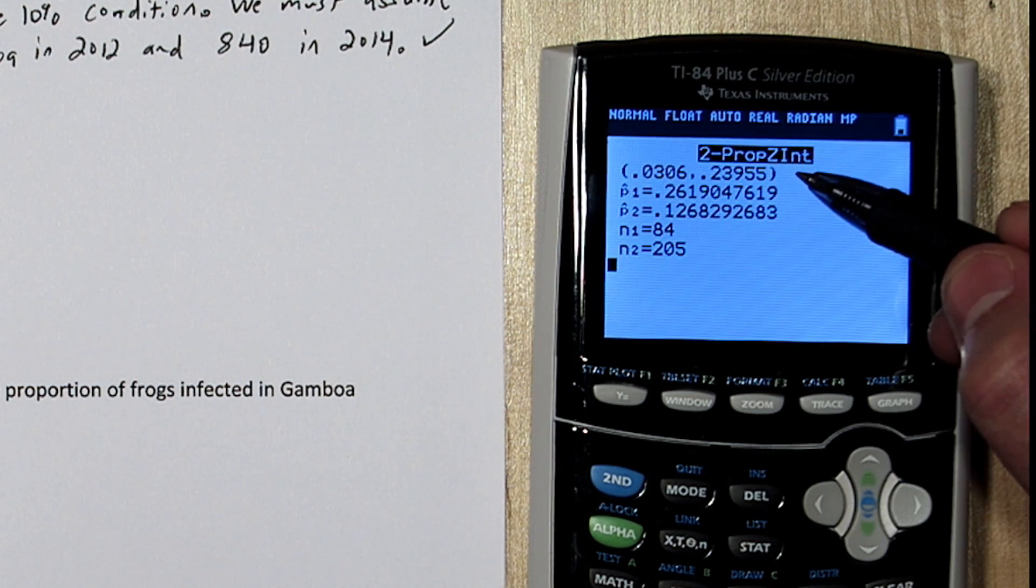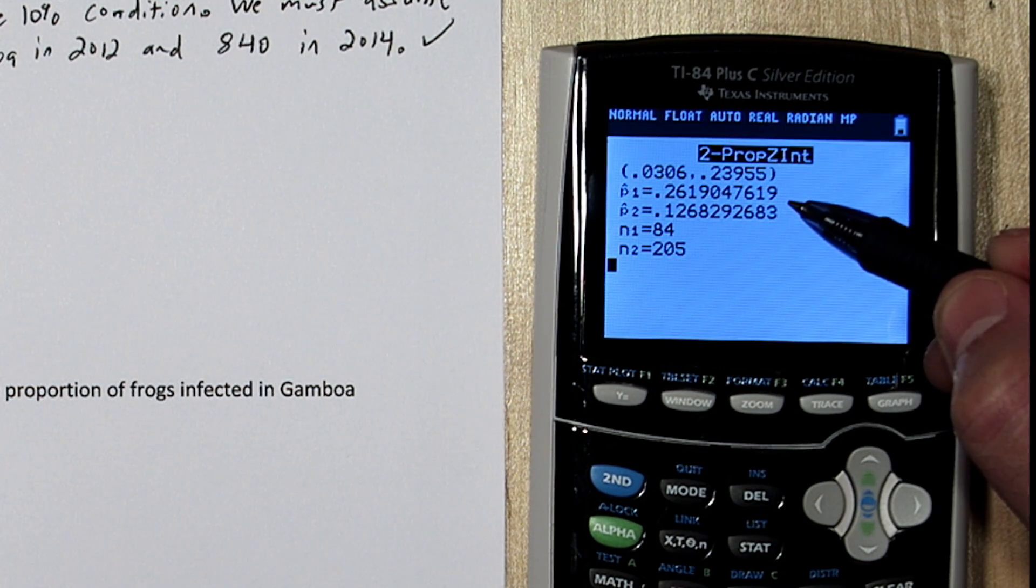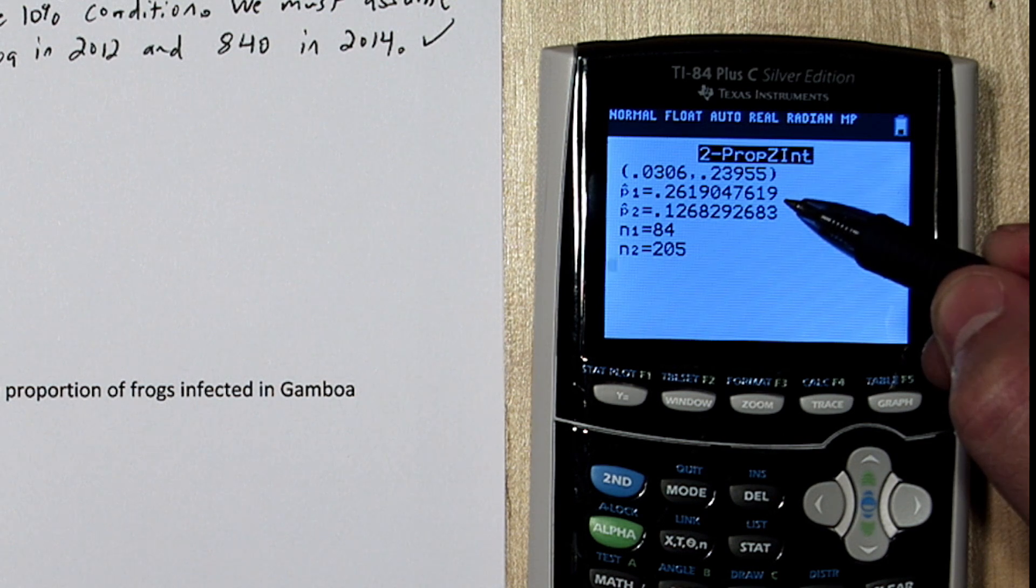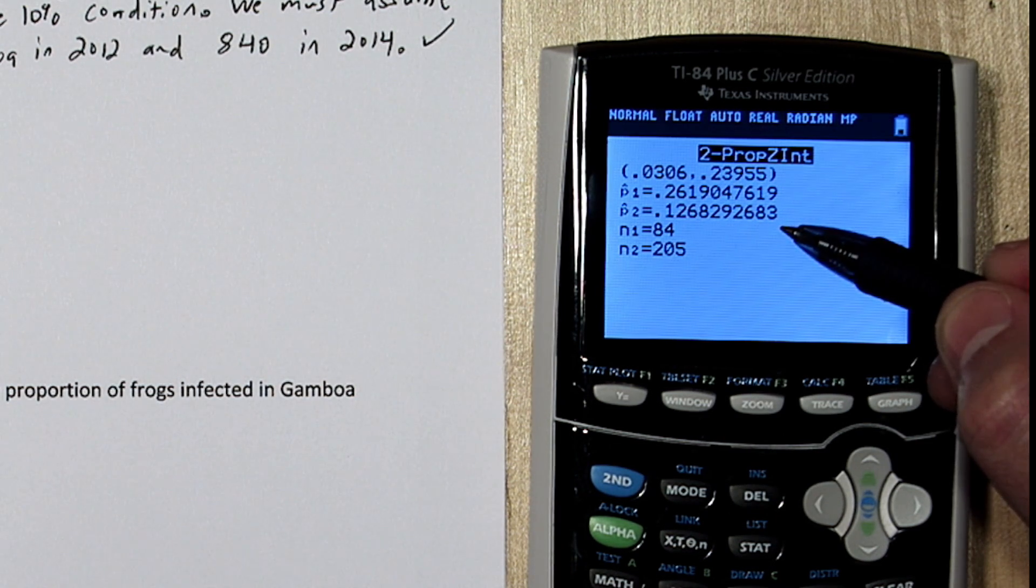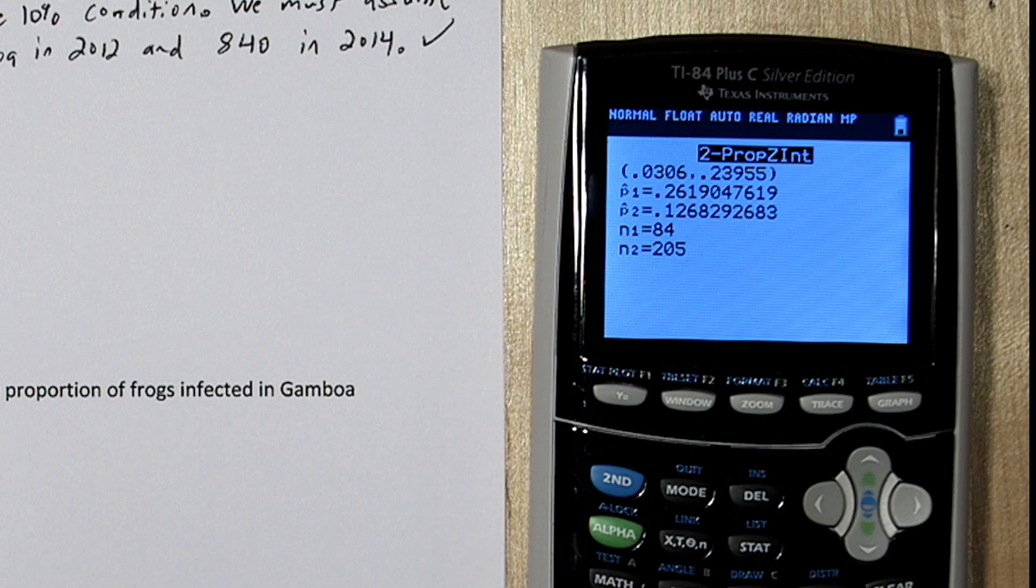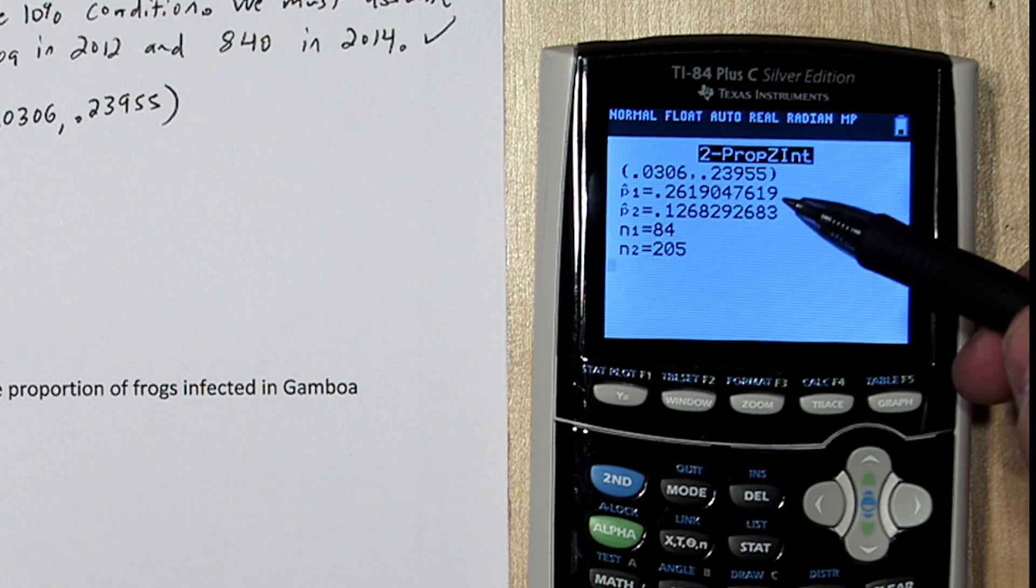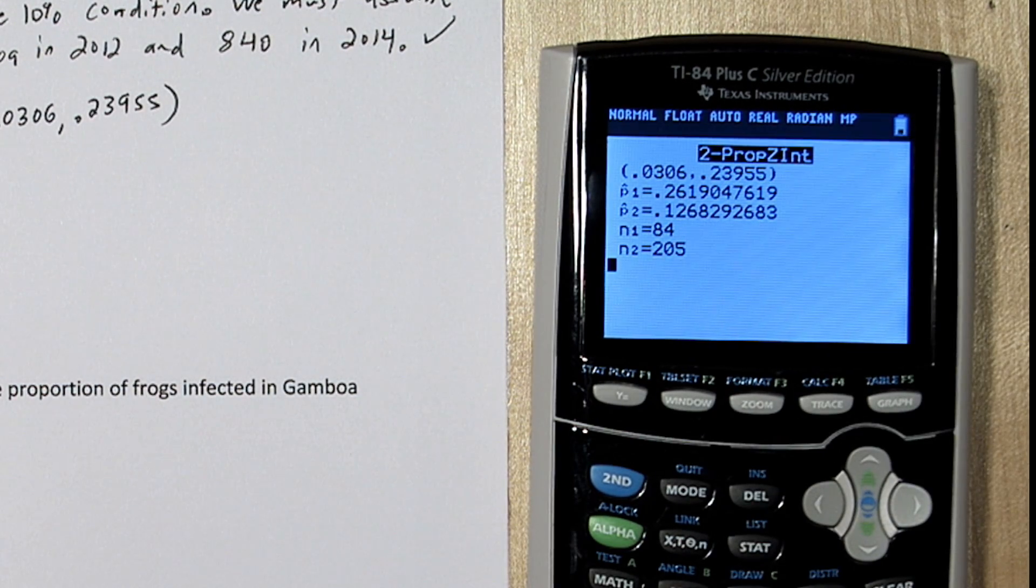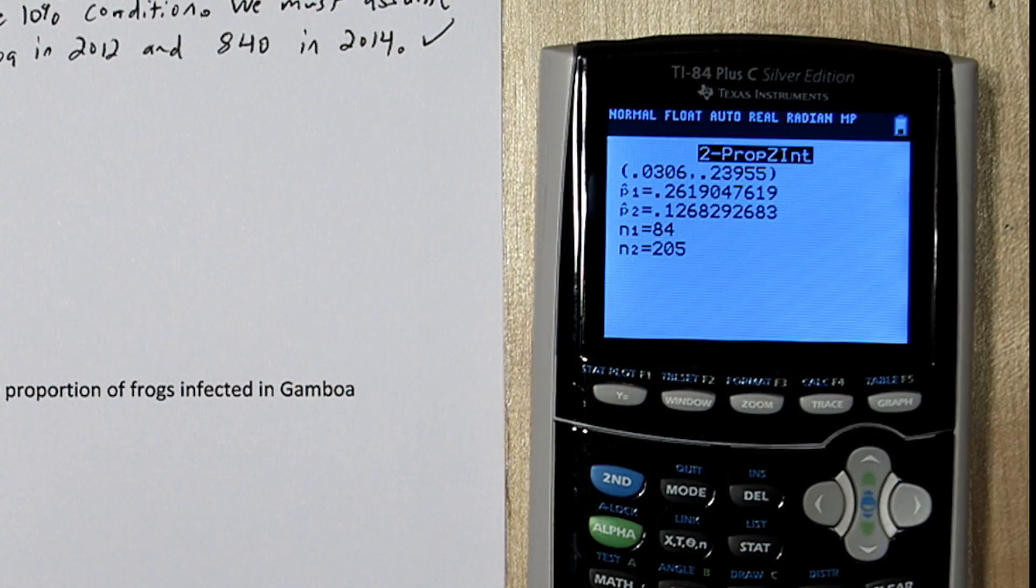Up here is our confidence interval. Then we have our sample proportion for 2014 and our sample proportion for 2012. If we subtract these two values, we'd get our point estimate, which is the center of our confidence interval.